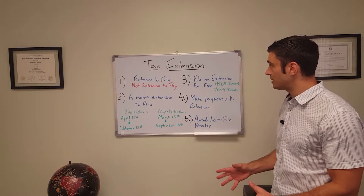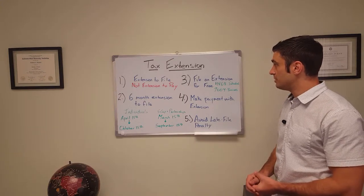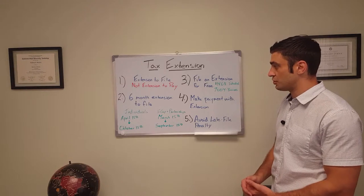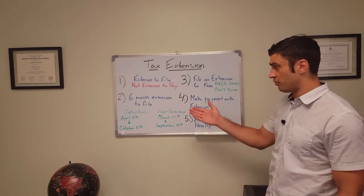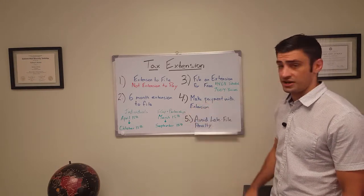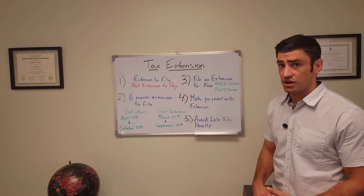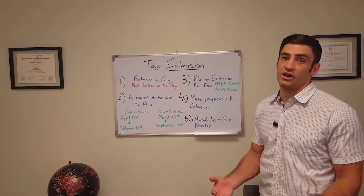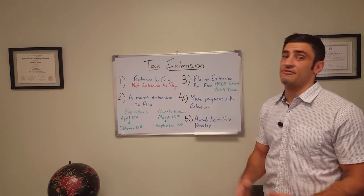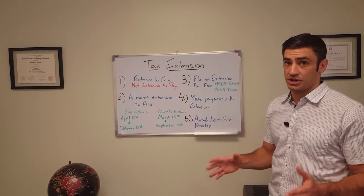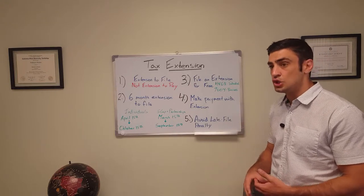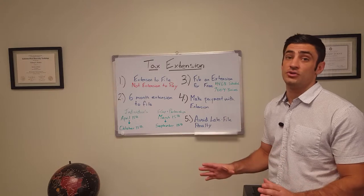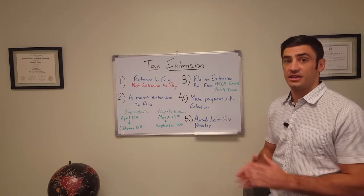The reason I think the whole tax extension got set up is because the IRS doesn't give you too much time to file your return, right? They only give you about four months as an individual or three months if you're an S-Corp or partnership to file your return. And it may take you longer to gather your documents, file your financial statements, get everything in order. And to make sure that you have an accurate return, they do allow the tax extension to make sure you can review and make sure that you have everything in line.